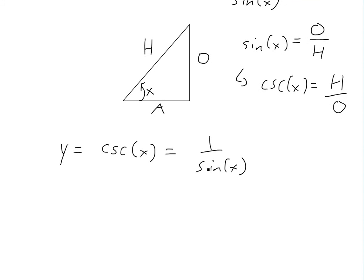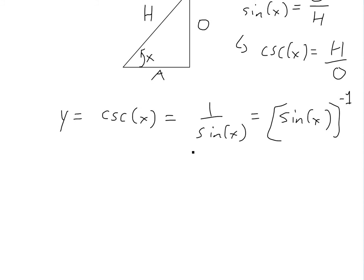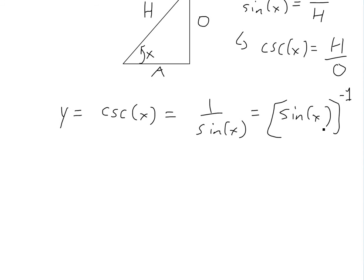Now for the derivative, we could write a useful trick. First we could rearrange this and write it as a power, so we can go sine of x all to the power of negative 1. This is just an inverse.